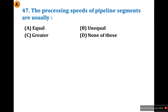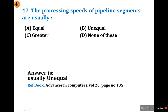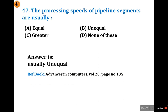The 47th question: the processing speed of pipeline segments are usually equal or unequal? Be careful — this is a tricky question. The processing speed of pipeline segments are usually unequal. If you search on Google you might find 'equal,' but the correct answer is unequal, as referenced in Computers, Volume 20, page 135. So the answer is B: unequal.